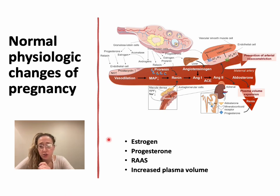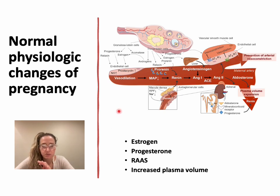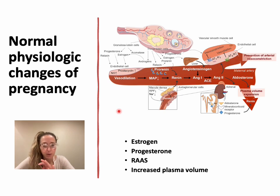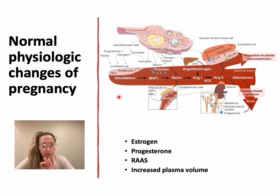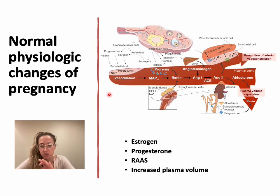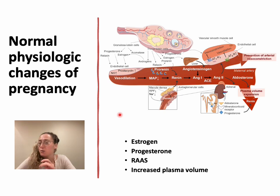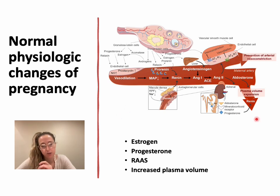Estrogen and progesterone increase, and that increases the renin-angiotensin-aldosterone system. I have this very complex photo here that goes through the estrogen-progesterone effect on the renin-angiotensin-aldosterone system. That is likely the reason for blood volume expansion in pregnancy — you can see the plasma volume expansion here.